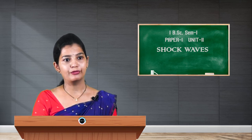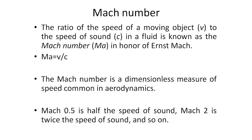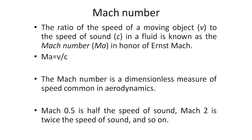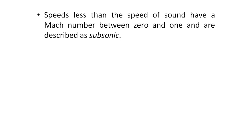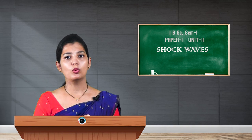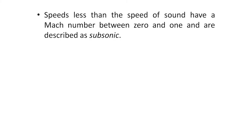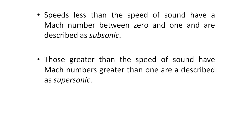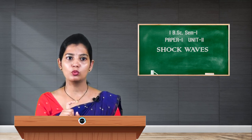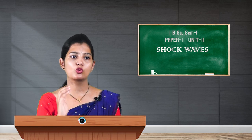Mach 0.5 means half the speed of sound; Mach 2 means twice the speed of sound. Speeds less than the speed of sound have a Mach number between 0 and 1 and are described as subsonic. Speeds greater than the speed of sound have a Mach number greater than 1 and are described as supersonic.